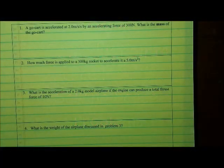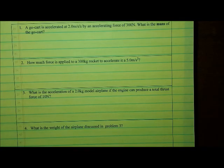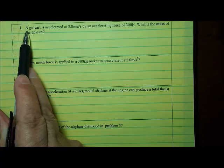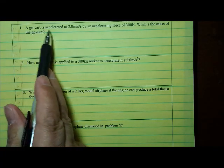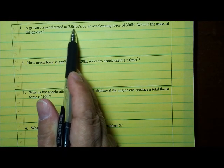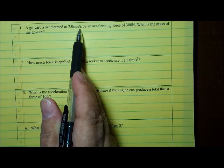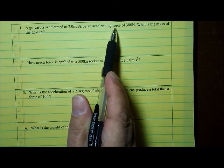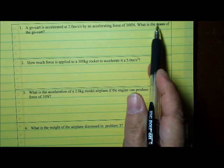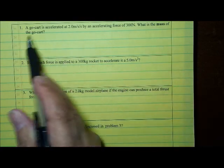Here we are, and we're going to solve four problems using the force equation. The first problem says a go-kart is accelerated at 2 meters per second per second — that's the same as 2 meters per second squared — by an accelerating force of 300 newtons. What is the mass of the go-kart?